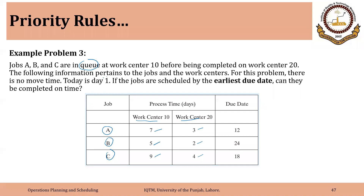Today is working day 1. The due date for job A is working day 12, for B it is 24, and for C it is 18. We have to use earliest due date to plan these three jobs on two machines, and the sequence must be processed first on work center 10 and then on work center 20. So the earliest due date sequence is: job A, then job C, then job B.